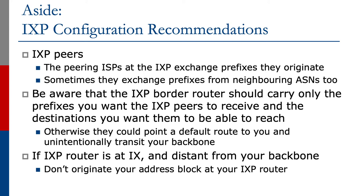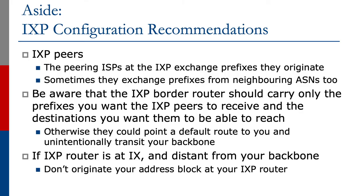Be aware that the Exchange Point border router should carry only the prefixes you want the Exchange Point peers to receive and the destinations you want them to be able to reach. If you have the full BGP table there, or if you have a default route there, your peers could potentially transit your backbone to the rest of the Internet. Also, if the Exchange Point router is at the IX and distant from your backbone, it's really important not to originate your address block at the Exchange Point router.